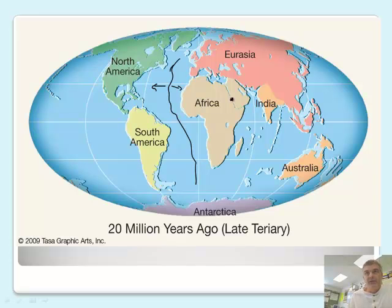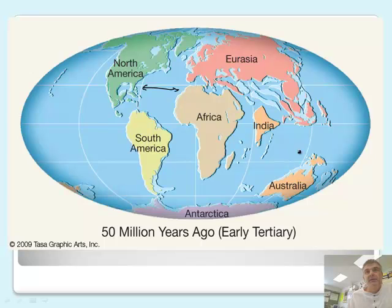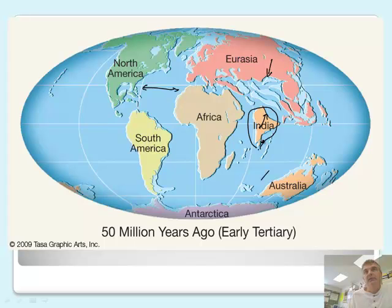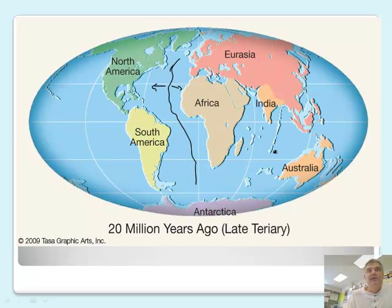We can see little by little what's happening. Right here is where that divergent plate boundary is. Look at India here, and here's Eurasia — we have a continent and a continent coming together. Here's India, here's Eurasia — crash — and mountains right here. The Himalayan mountains, which we talked about earlier. Also note Australia has gotten further north over time.